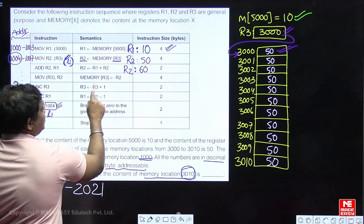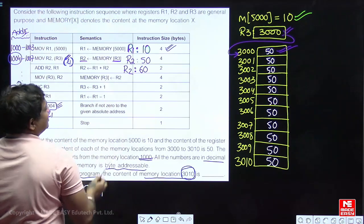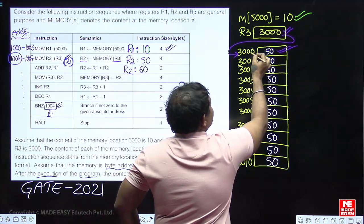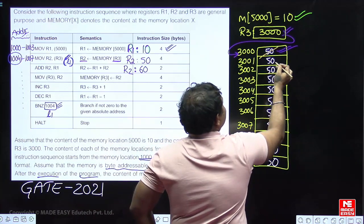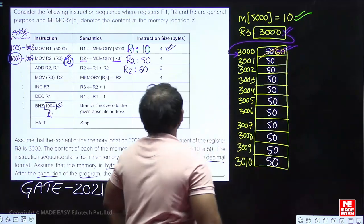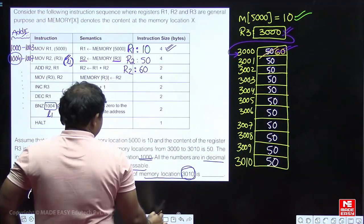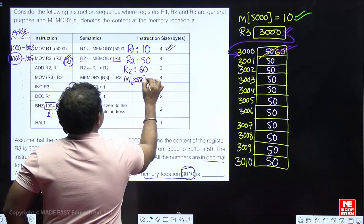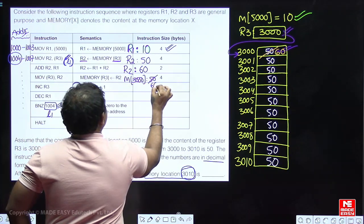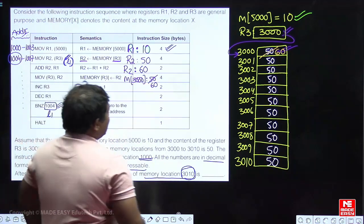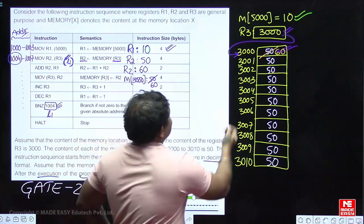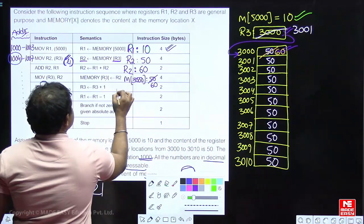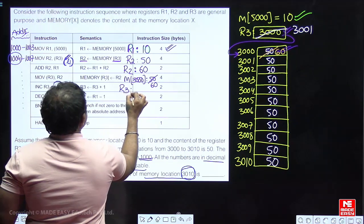R2 value (60) is stored into memory whose address is in R3. R3 still contains 3000, so memory[3000] is updated from 50 to 60. Next, R3 is incremented from 3000 to 3001.